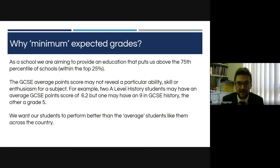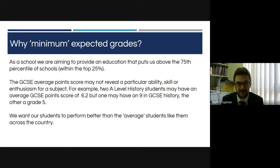As a school we're really clear that focusing on the top 25% is a natural fit for us. We don't want our students to just be achieving what the average student achieves — we want them to be keeping pace with those students who are achieving the best results in the country. The other reason why these are minimum expected grades and not target grades is that the GCSE average point score may not reveal a particular ability or skill within a certain subject. You might have a student with a GCSE average point score of 6.2 but they achieved a 9 in GCSE history and they're taking history at A-level — we would therefore expect them to exceed their minimum expected grade.